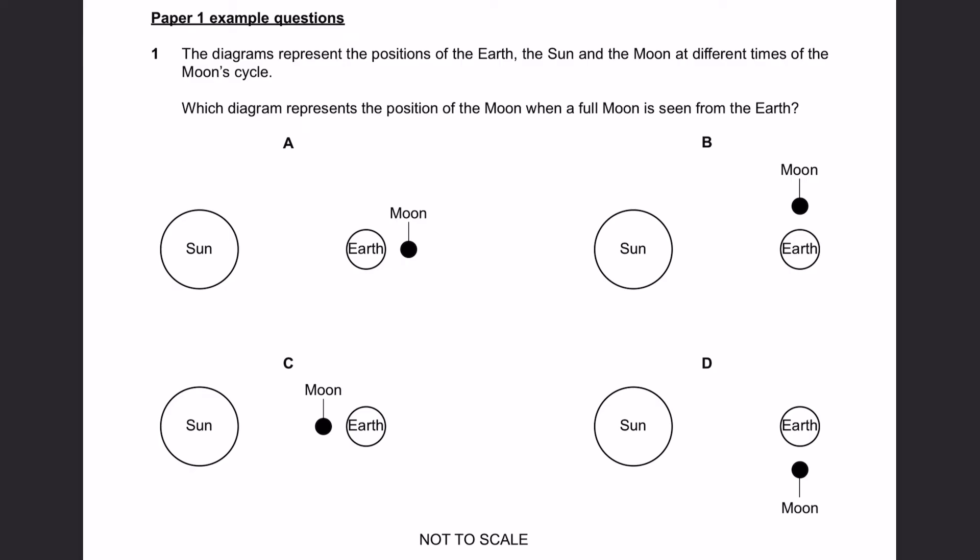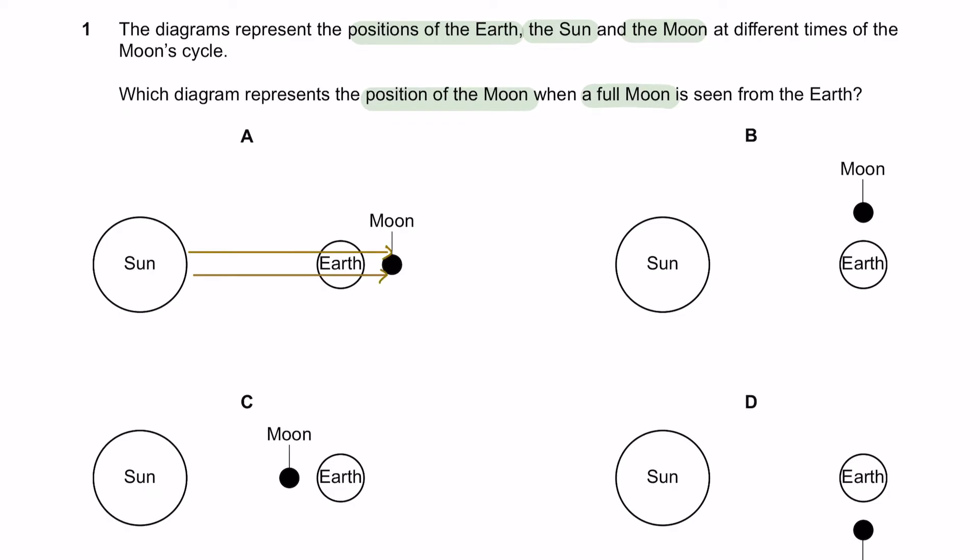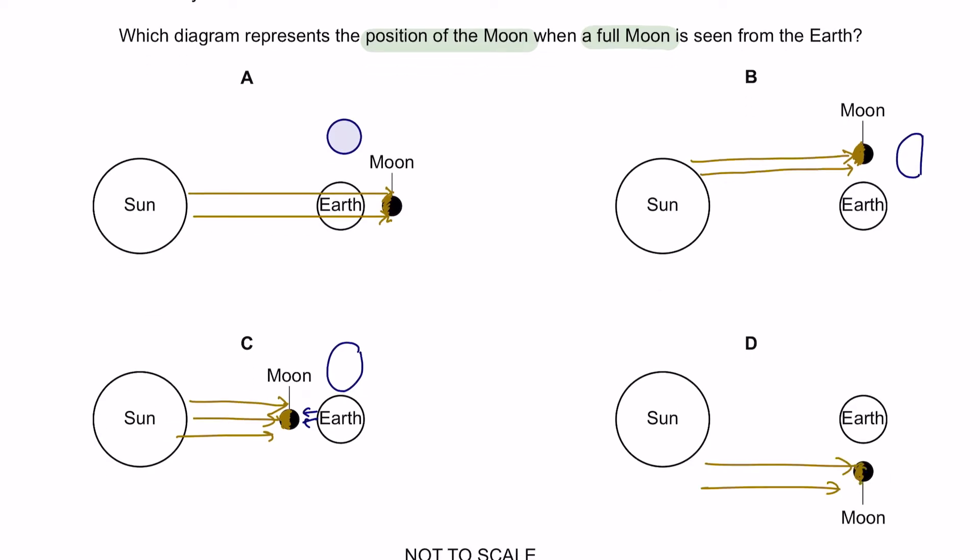Paper 1, Question 1. The diagrams represent the positions of the Earth, the Sun and the Moon at different times of the Moon's cycle. Which diagram represents the position of the Moon when a full Moon is seen from the Earth? For the first option, the light from the Sun directly hits this surface of the Moon, so a full Moon can be seen from the Earth. So the answer here is A.